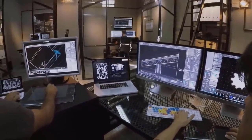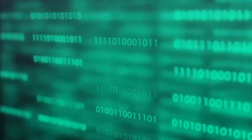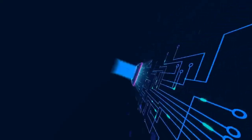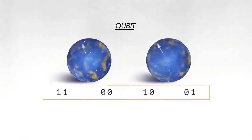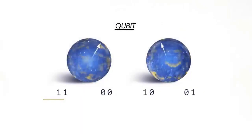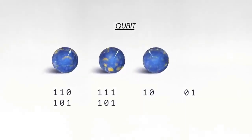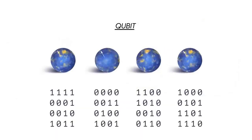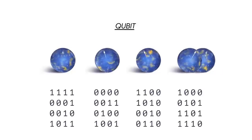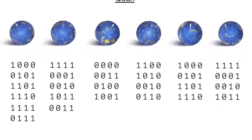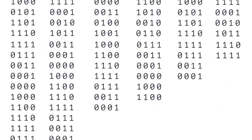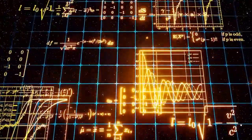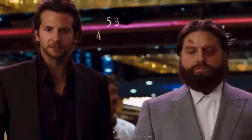Unlike classical computers, which rely on bits that can either be zero or one, quantum computers employ qubits — quantum counterparts of bits. Qubits possess a remarkable ability to exist in a superposition, simultaneously representing both zero and one. This unique property, along with the phenomenon of entanglement where qubits become interconnected, allows quantum computers to perform computations in parallel, exponentially increasing their processing power.